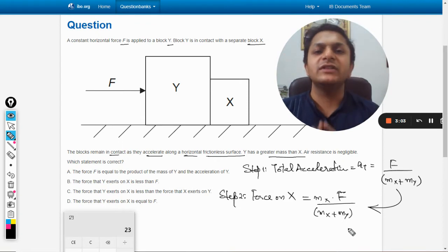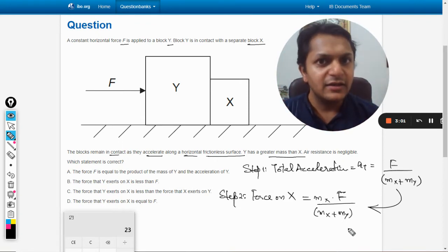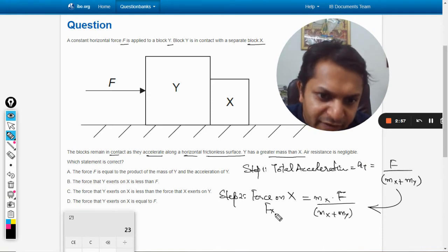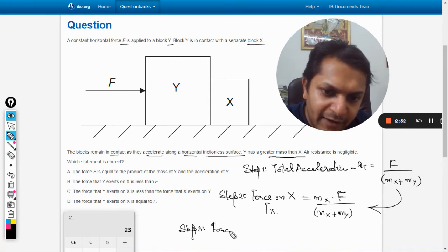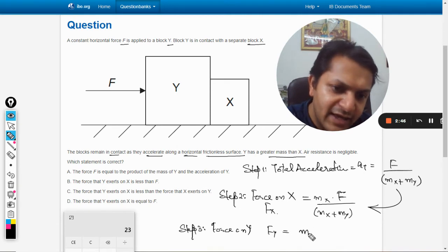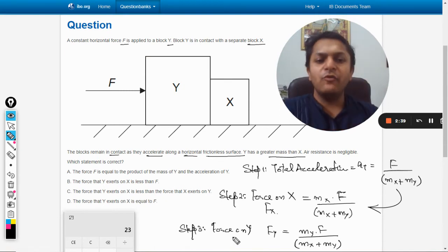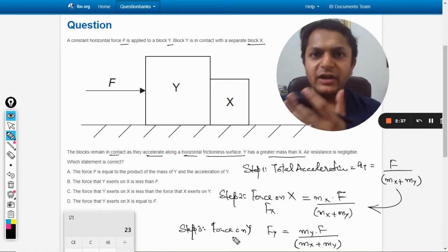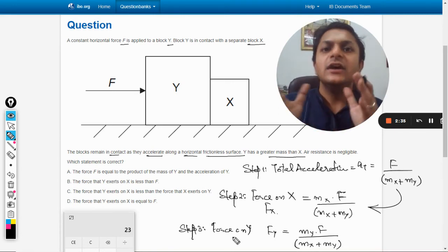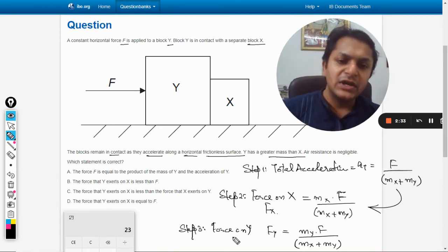So let us call it F_x. Let us go for step number three now. What is the force on Y? F_y is m_y into the acceleration, so that will be this. M_y into F divided by (m_x + m_y) because that is mass into acceleration particularly. So this is for the individual bodies.